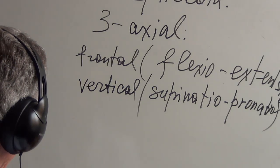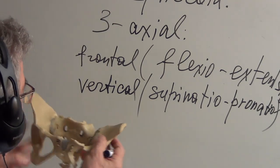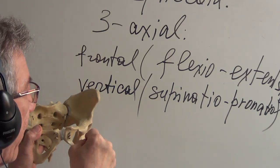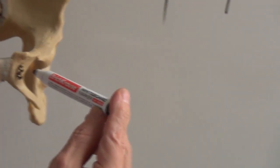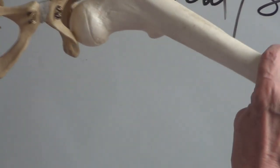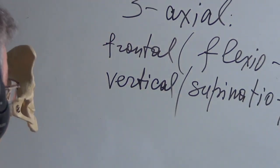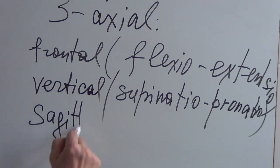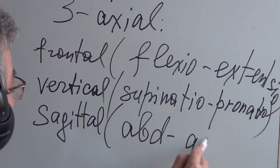And the last third axis is sagittal axis. This way. Sagittal axis. When we use sagittal axis we can find two movements: abductio and adductio. Sagittal axis, abductio and adductio.